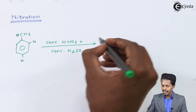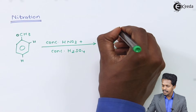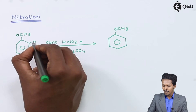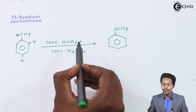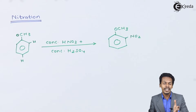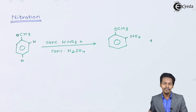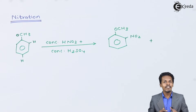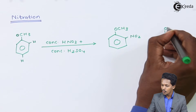When anisole is treated with concentrated HNO₃ in the presence of concentrated H₂SO₄, a mixture of products is obtained. The OCH₃ group remains as is, while the hydrogen at the ortho position is removed in the form of H₂O as it reacts with HNO₂, and NO₂ gets attached at the ortho position. Similarly, at the para position, the HO group of HNO₃ removes the para hydrogen, giving a para product with OCH₃ and NO₂.